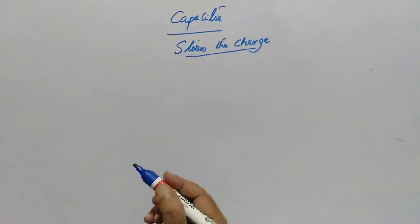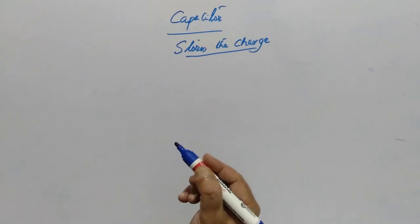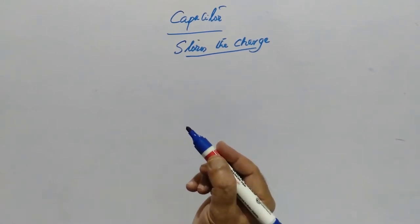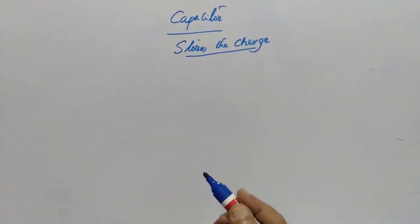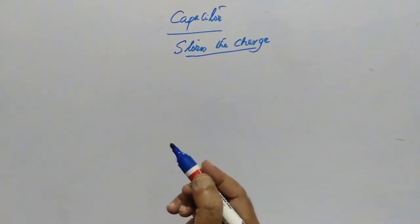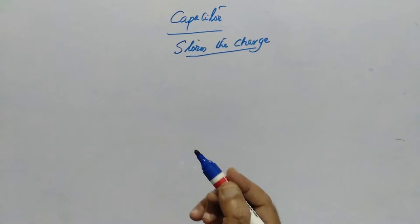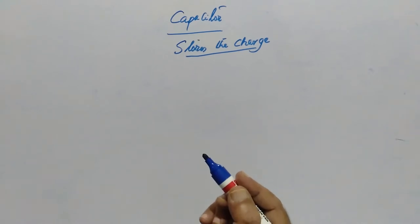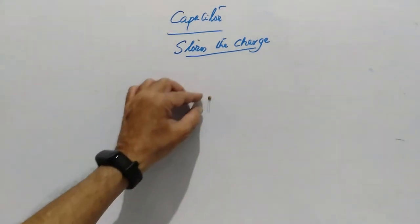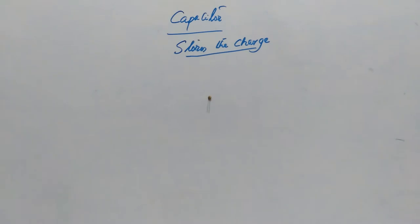Whatever the shape of the capacitor may be, every capacitor must have two plates or two aluminum foils or two metallic foils, and in between one insulator will be there. These are called ceramic capacitors.